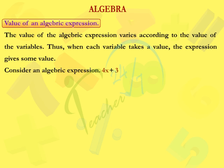Consider an algebraic expression 4x plus 3. Let us take x is equal to 2. Then, 4x plus 3 is equal to 4 into 2 plus 3, which is equal to 8 plus 3, which is equal to 11.